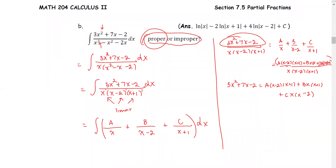Now we replace x with numbers that make it easy to find A, B, and C. First, let x equal 0. If x is 0, the left side equals negative 2. On the right side, the terms involving B and C both become 0 because they contain the factor x, leaving negative 2 times A, so A equals 1.